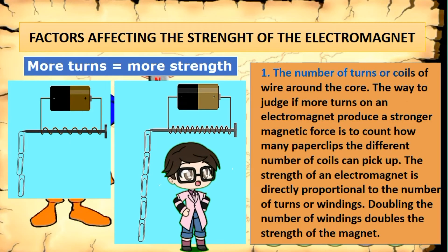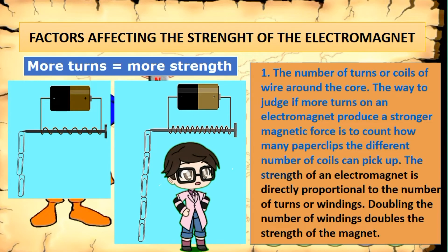The number of turns of wire around the core: the way to judge if more turns on an electromagnet produce a stronger magnetic force is to count how many paper clips the different number of coils can pick up. The strength of an electromagnet is directly proportional to the number of turns of windings. Doubling the number of windings doubles the strength of the magnet.